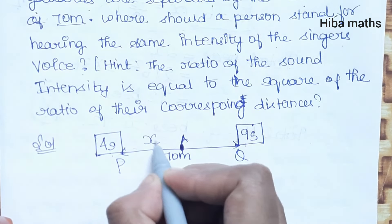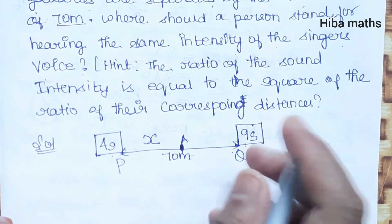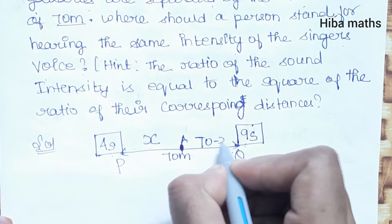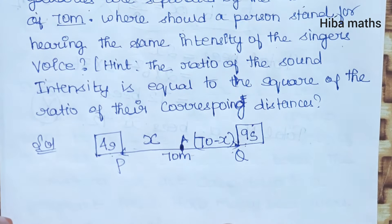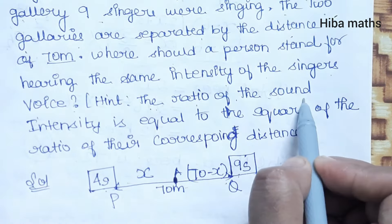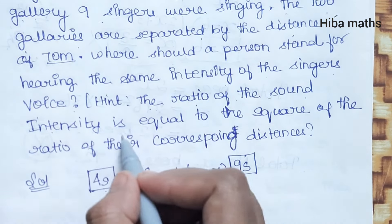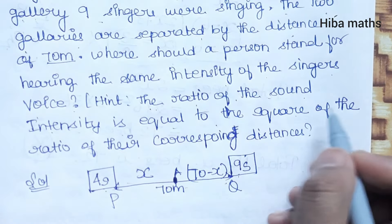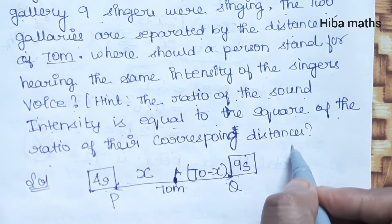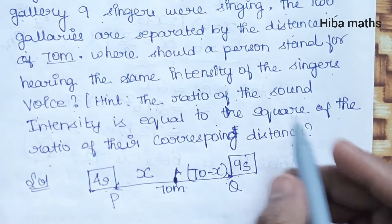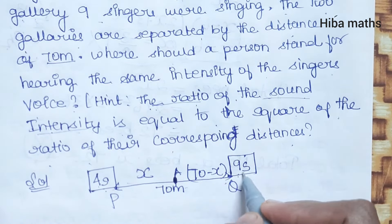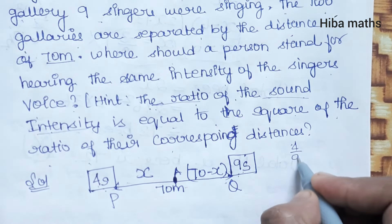The PA distance is x, and the total distance is 70. That means the balance is 70 minus x. The ratio of the sound intensity is 4 by 9.